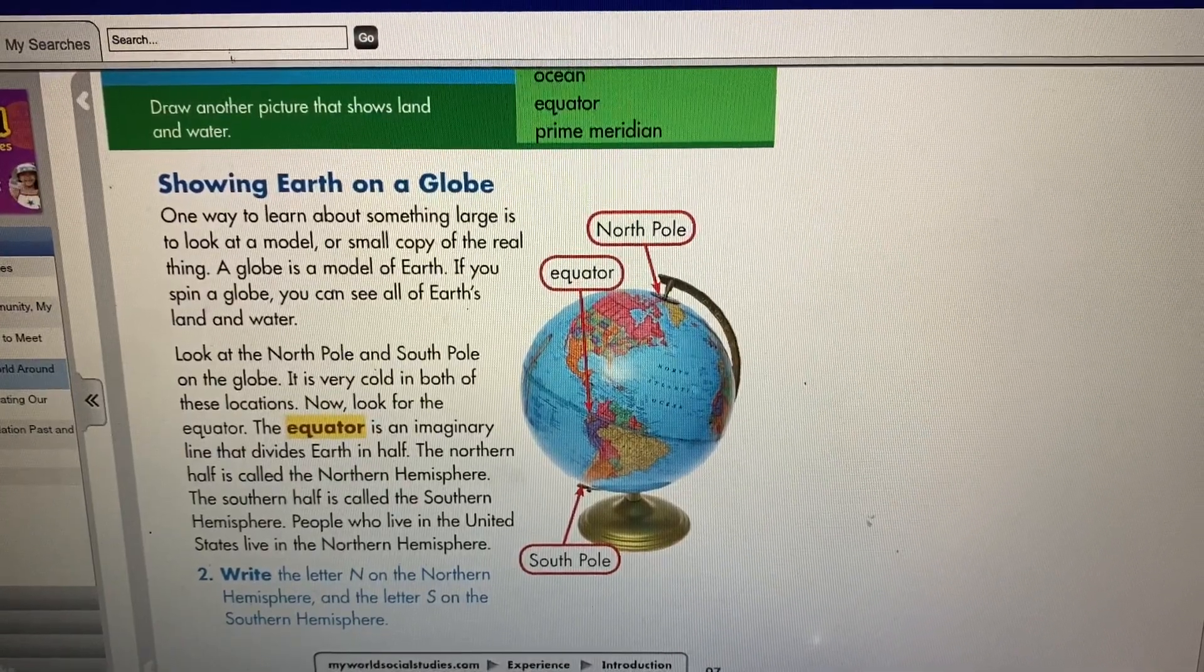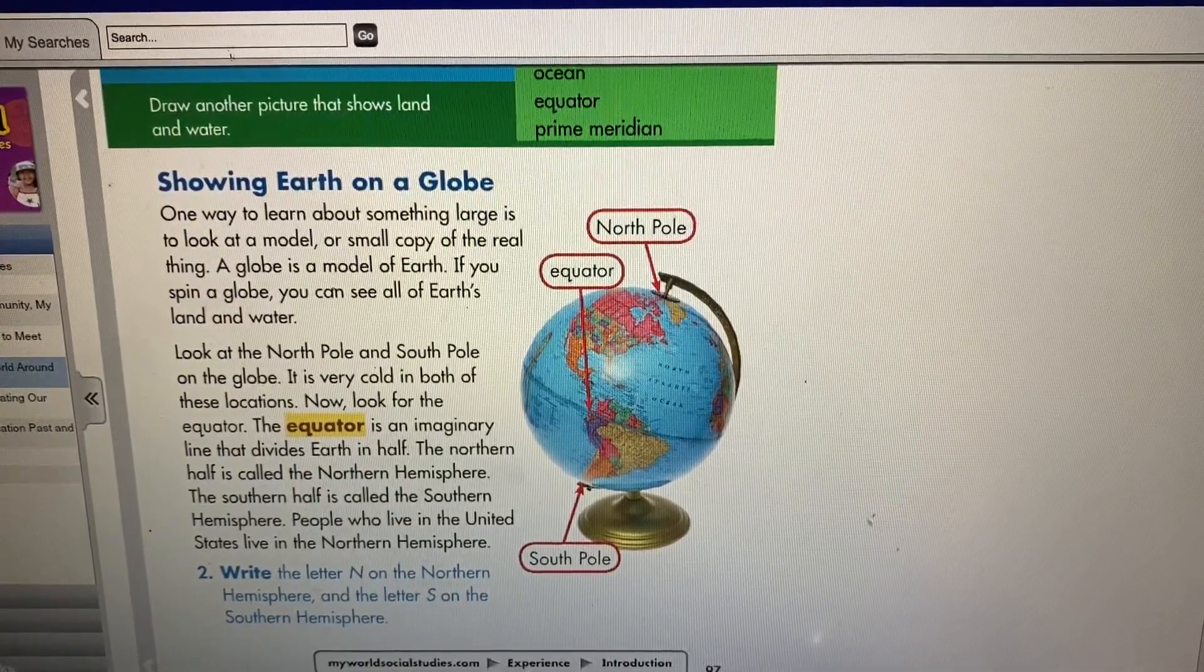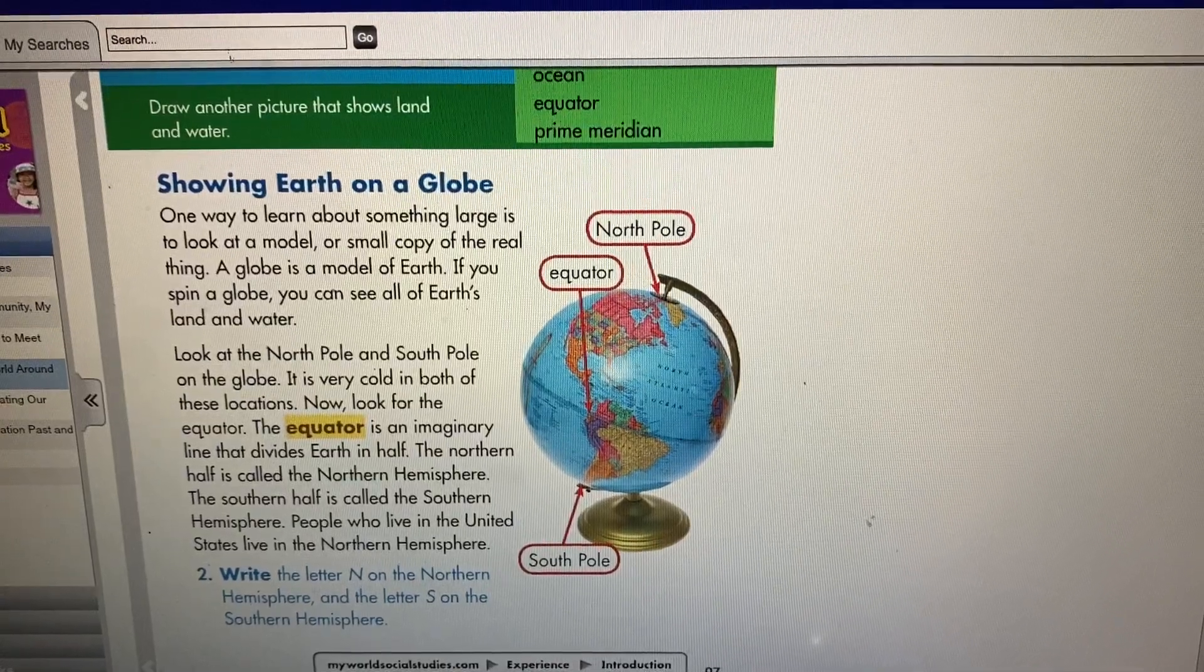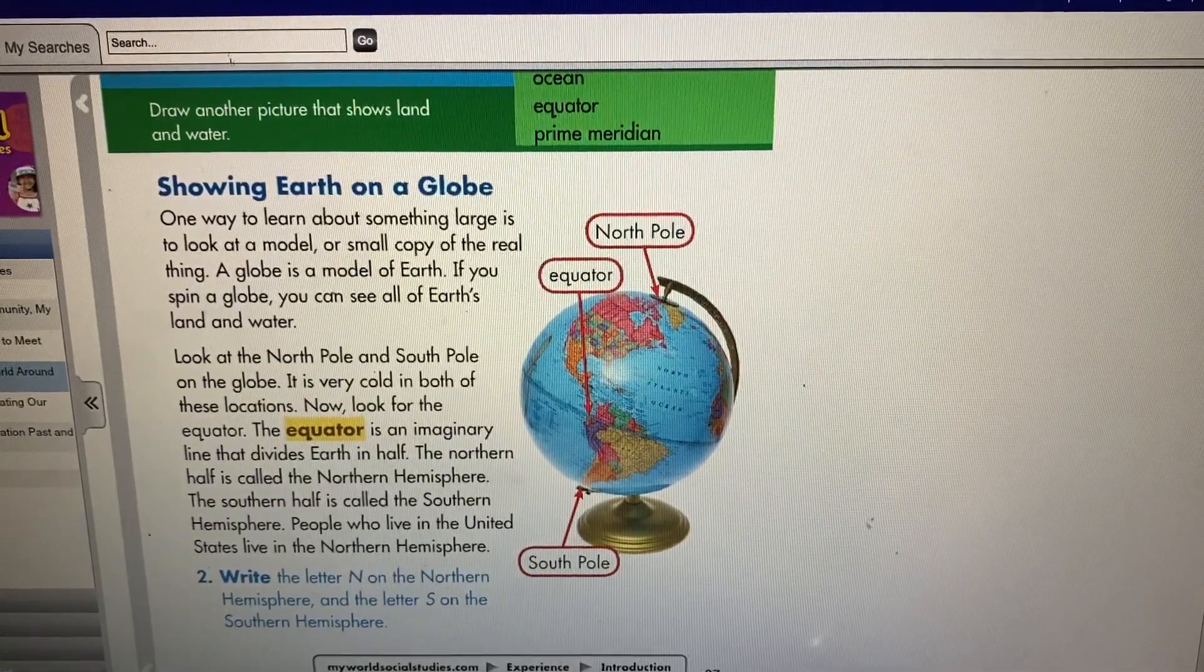The northern half is called the Northern Hemisphere. The southern half is called the Southern Hemisphere. People who live in the United States live in the Northern Hemisphere.